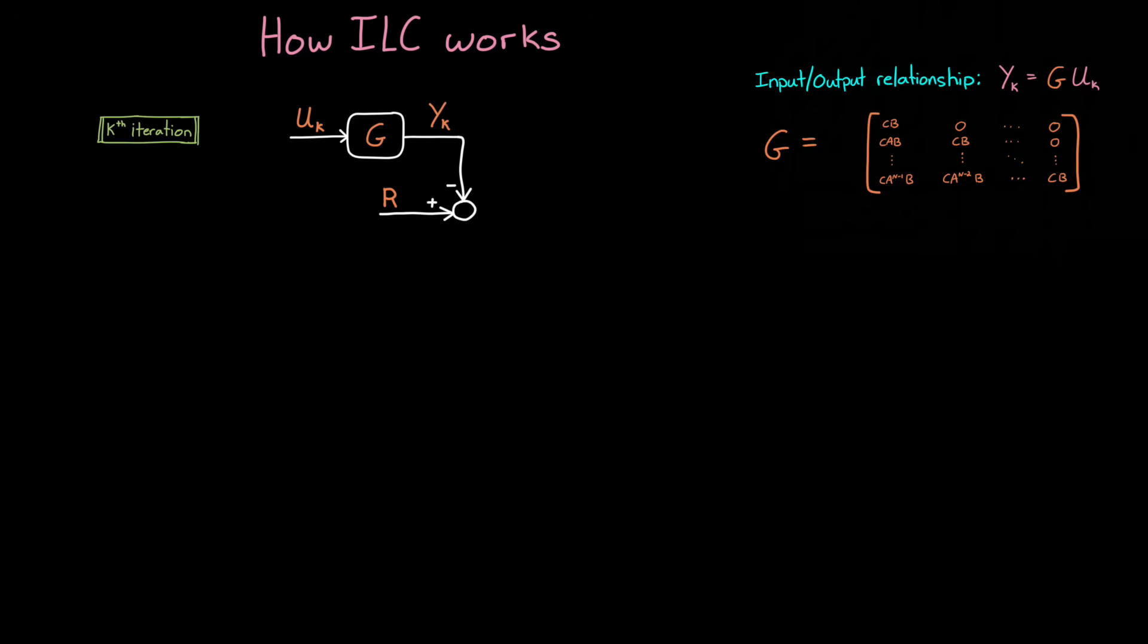Therefore, we compare the output to this reference signal. And then the difference between them is the error across the entire iteration. All right, so now the question that we have is how do we update u in the next iteration, such that the error across the entire run is reduced?